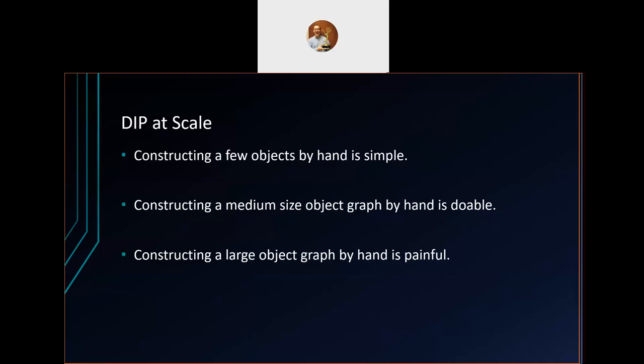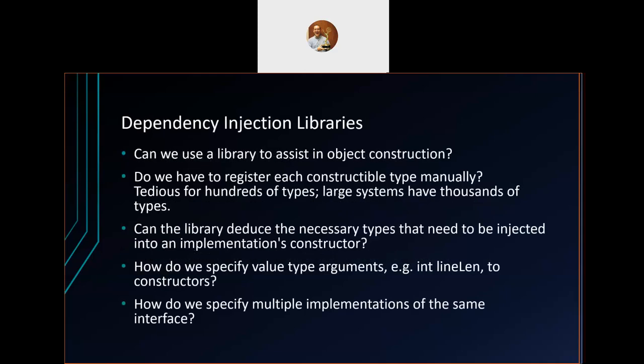It's easy to construct a few objects by hand and wire them into constructor arguments. At medium scale it's doable but gets tedious. When talking about thousands of objects or hundreds of interface types, constructing everything manually can be very painful — so we can use a library to assist with object construction.